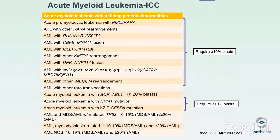In the ICC, it's pretty much the same logic, but the ICC enforces a 10% blast threshold, which also applies to CEBPA for ICC. BCR-ABL remains 20% for ICC as well. When you pass the 9% threshold and don't have any AML-defining genetic abnormalities, you're in the MDS slash AML category, which includes TP53, myelodysplasia-related, and NOS.